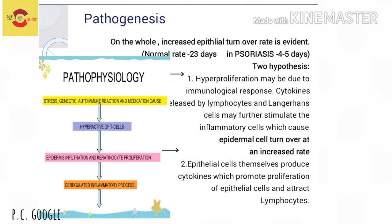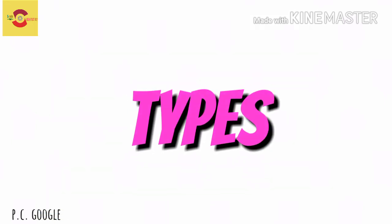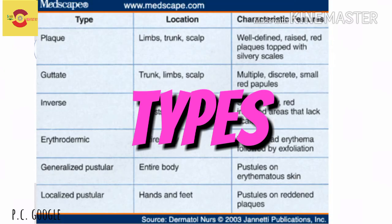Two hypotheses suggest the pathogenesis of psoriasis. The first hypothesis suggests that cytokines released by lymphocytes and Langerhans cells may be responsible for hyper-proliferation of the epithelium. The second hypothesis suggests that epithelial cells themselves produce cytokines which promote proliferation of the epithelial cells.